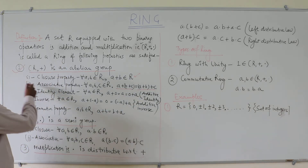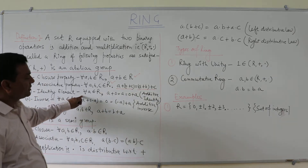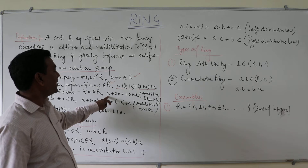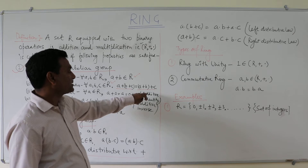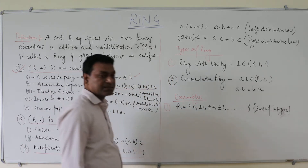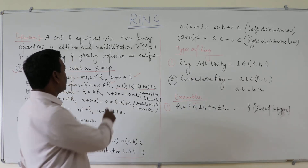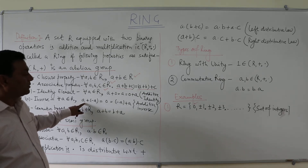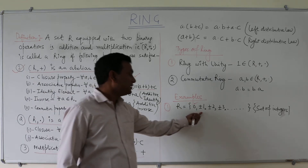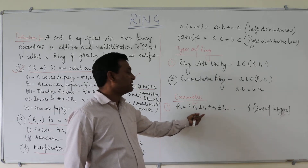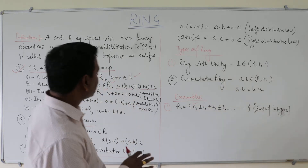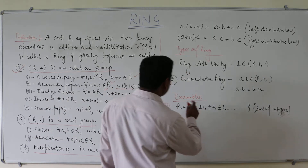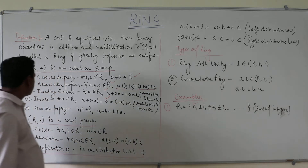The third property is the identity element. Here we take the identity element as 0. Since a + 0 = a = 0 + a, and 0 is present in this particular set, this property is also satisfied. The fourth property is the inverse — if we take element 1, its inverse −1 is also in the set. If we take 2, then −2 is also there. So the additive inverse property holds for every integer.